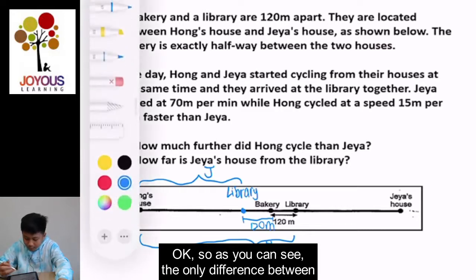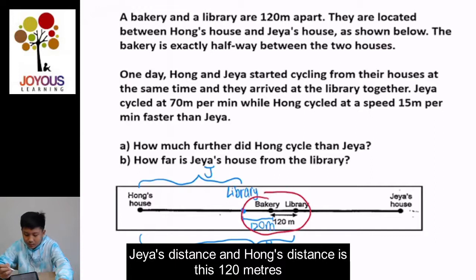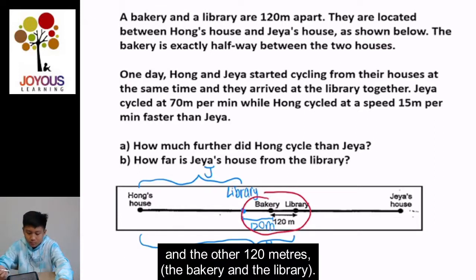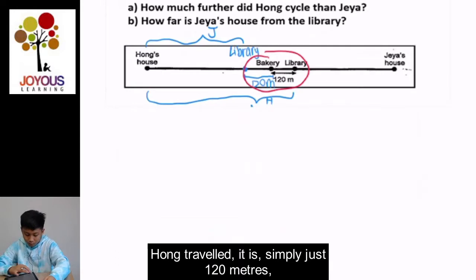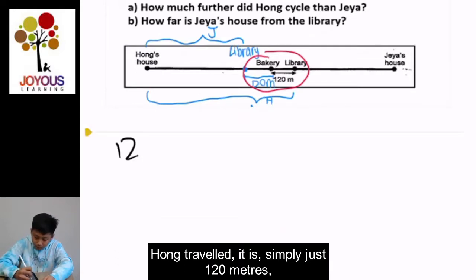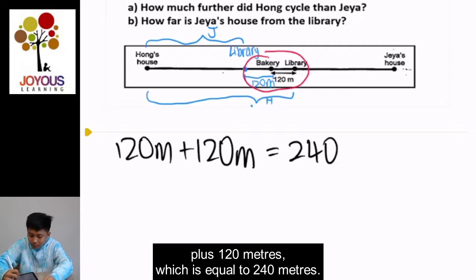The distance that Hong traveled is from his house to the actual library. As you can see, the only difference between Jaya's distance and Hong's distance is the 120 meters between the bakery and the library, plus another 120 meters. So to find out how much further Hong traveled, it's simply 120 meters plus 120 meters, which equals 240 meters. That's the answer for Question A.